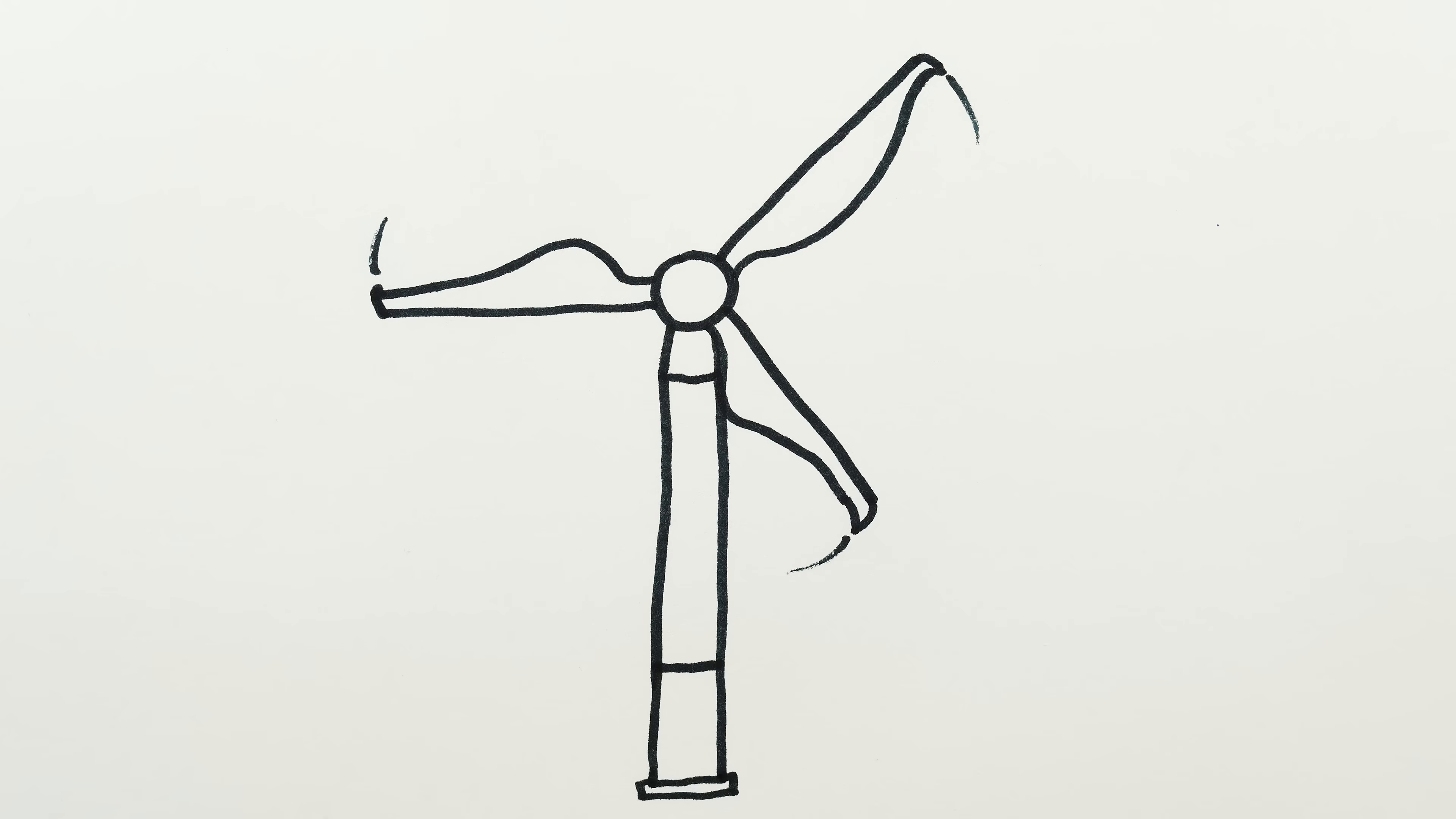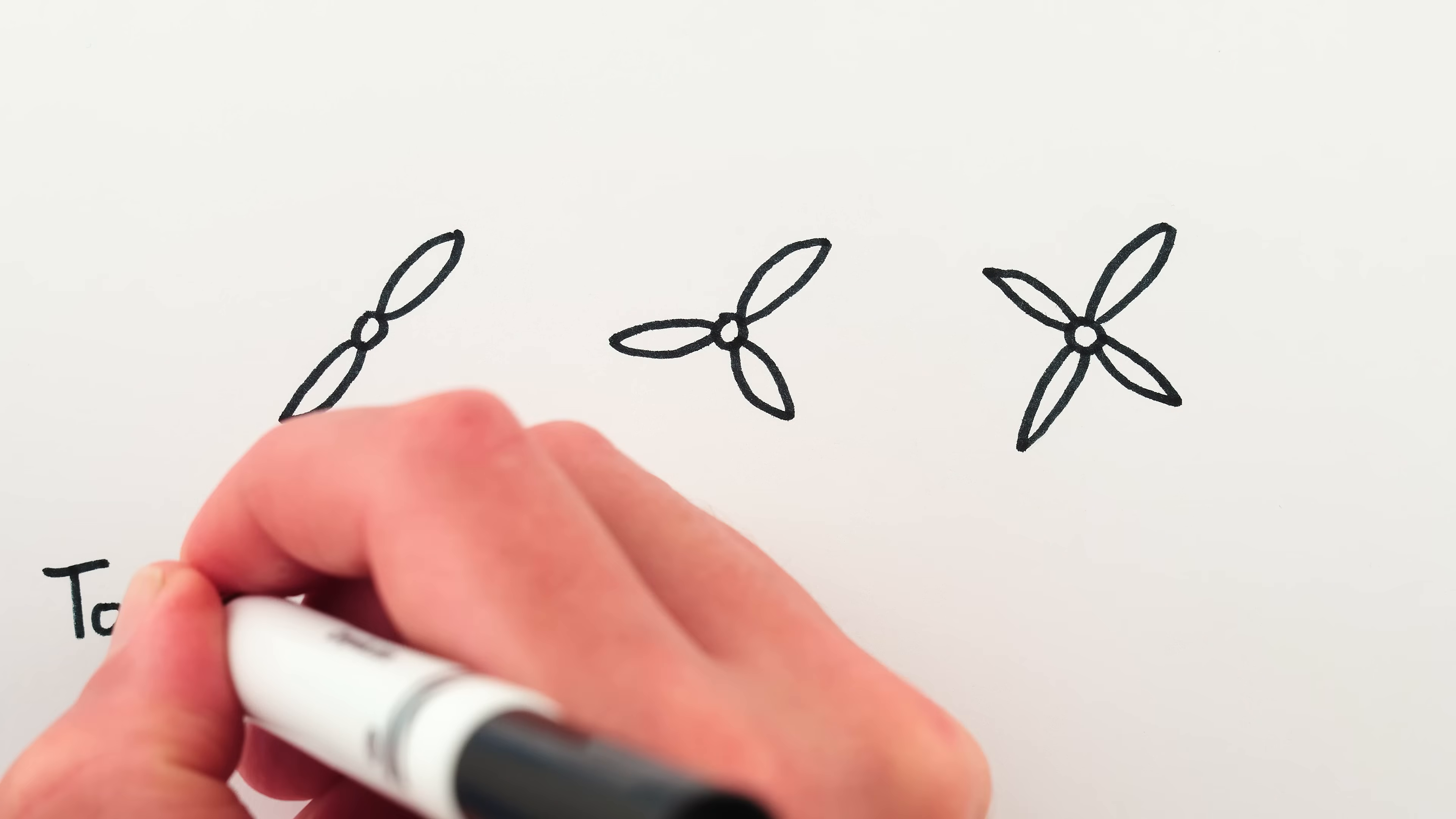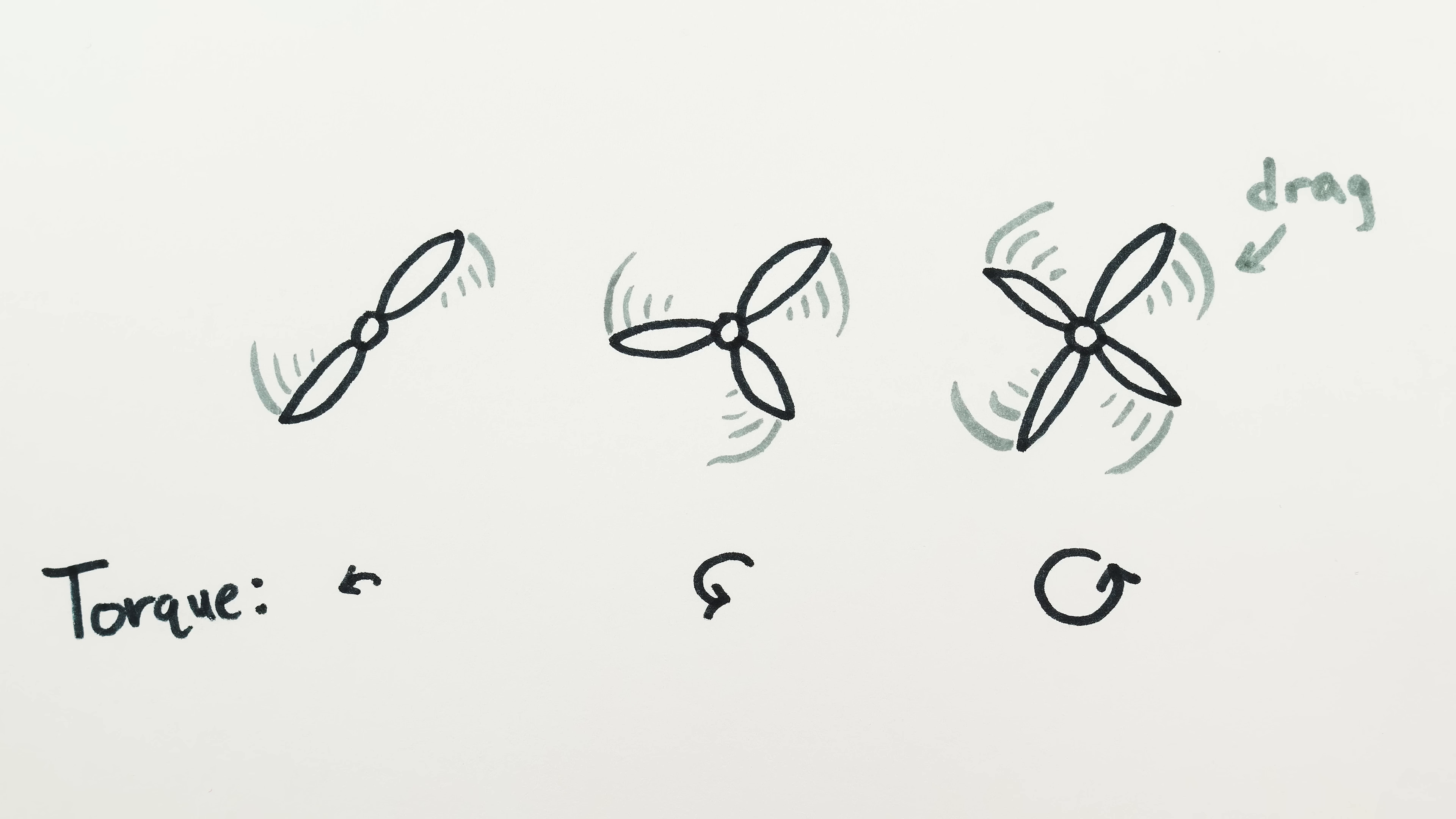The first reason for three blades comes from physics. All else being equal, the more blades a windmill has, the more torque it can generate, but also the more drag it has, because each additional blade has to cut through the wind, and drag grows quickly the faster the windmill is spinning.